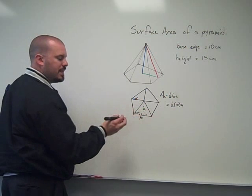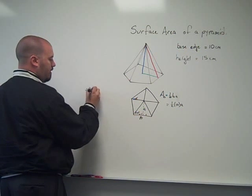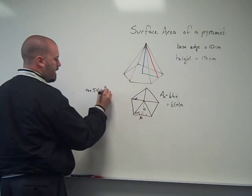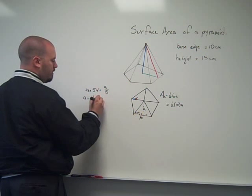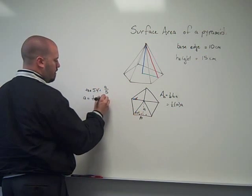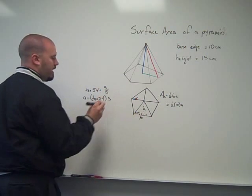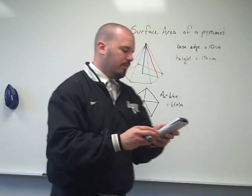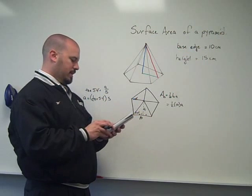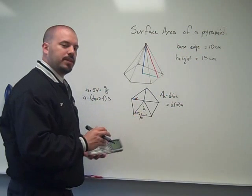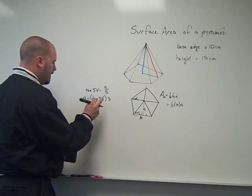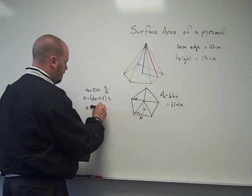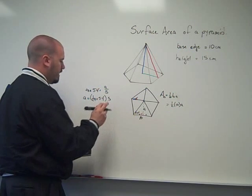So tangent of 54 degrees is equal to a over 5, or a is equal to the tangent of 54 degrees times 5. So I found my apothem, and go to my calculator and type that in and get an approximate. So 5 times the tangent of 54, it's approximately 6.88. But I like to just leave it as that when I'm doing my calculations, so approximately 6.88.